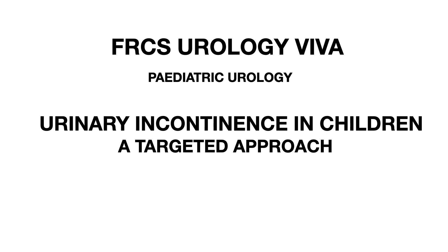'What are the neurogenic causes of urinary incontinence in children?' These include spina bifida or sacral agenesis. 'What are the anatomical causes of urinary incontinence?' These are exstrophy, epispadias, and ectopic ureter in females.